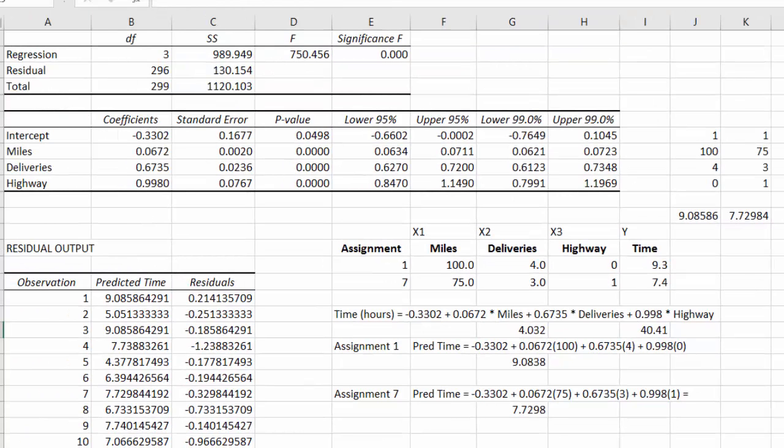For convenience, I could also try using the SUMPRODUCT function to do the same kind of calculation. So I align the data values along the coefficients. So I put a 1 here for the intercept, 100 for the miles, 4 for the deliveries, and 0 for the highway. And I took the sum product of the coefficients and the variable values. That gives me the same result, 9.0838. Then I copied over this formula for the new data values: 1, 75, 3, and 1. That gives me 7.7298 that I have here.